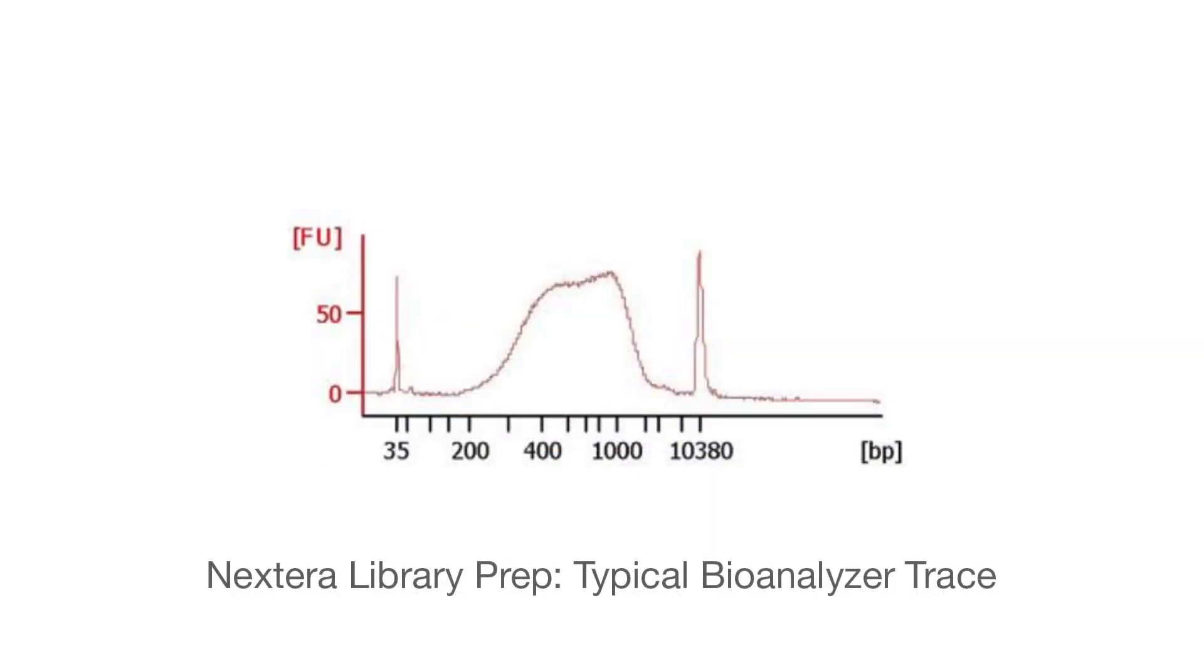Here is a typical bioanalyzer trace from the NextTera library prep. Notice the wide distribution. An ideal library ranges from about 200 base pairs to 1 kilobase. We anticipate most of the library to be within this size range.